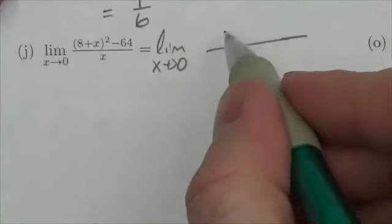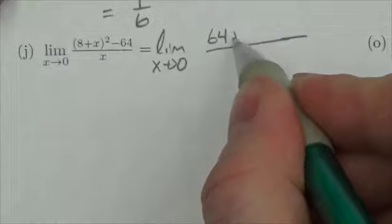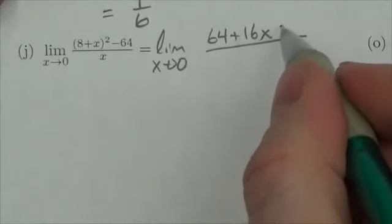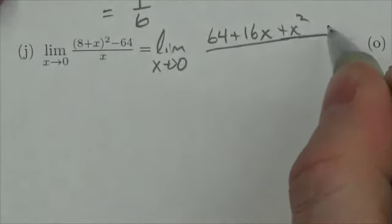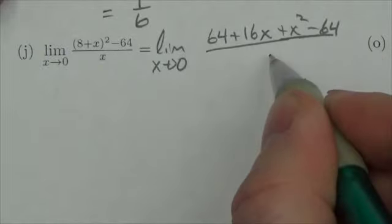8 plus x all squared is going to end up being 64 plus 16x plus x squared minus 64, and this is all over x.